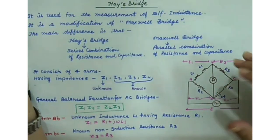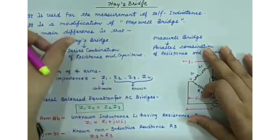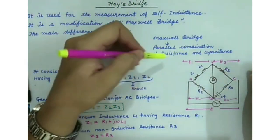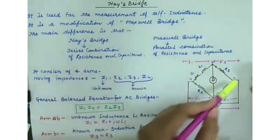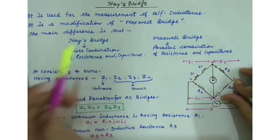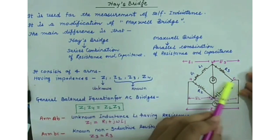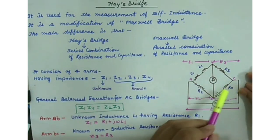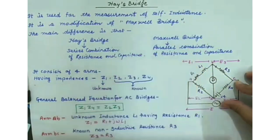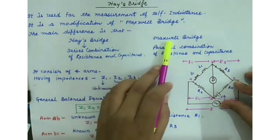It is the modification of Maxwell Bridge. The main difference between Maxwell Bridge and Hay's Bridge is that in Maxwell Bridge, we use a parallel combination of resistance and capacitance over one arm of the bridge. But in Hay's Bridge, we use a series combination of resistance and capacitance. This is the main difference between the two bridges.